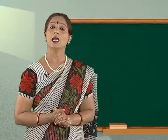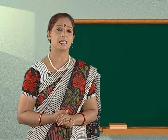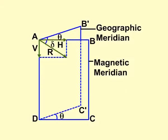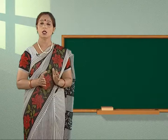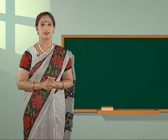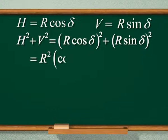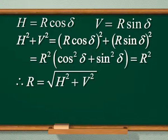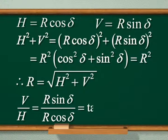Let the total intensity of the Earth's magnetic field at a place be R and the angle of dip be delta. If we resolve R into two rectangular components, we get horizontal component H equal to R cos delta along AB, and vertical component V equal to R sin delta along AD. Knowing the values of horizontal and vertical components, one can find the total magnetic field strength R as: R equals the square root of H squared plus V squared. The ratio of V and H gives tan delta.